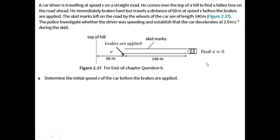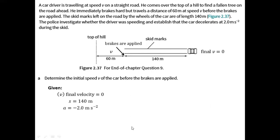For the first question, determine the initial speed v of the car before the brakes are applied. The given information is: final velocity equals zero, displacement is 140 meters — positive since the car is moving to the right — and acceleration is negative 2.0 meters per second squared, since the car was slowing down with velocity directed to the right, meaning acceleration is directed to the left.